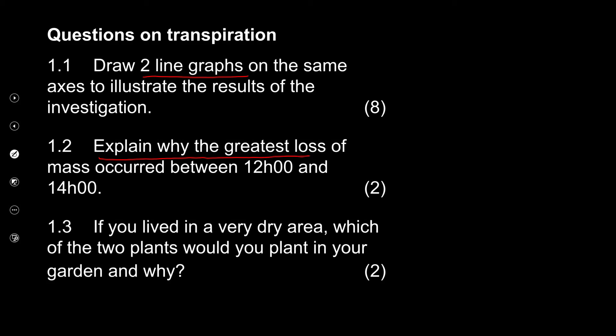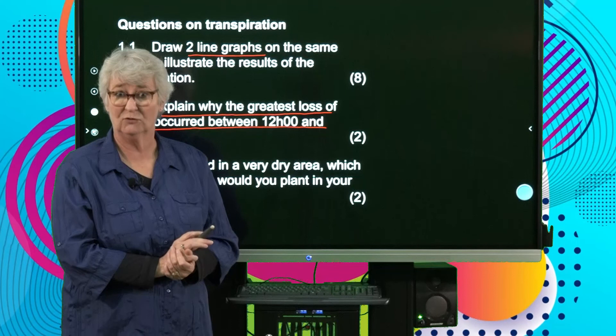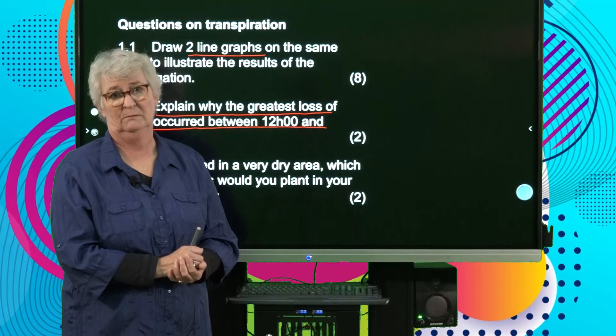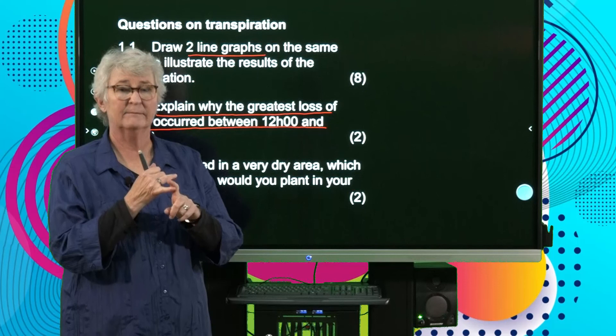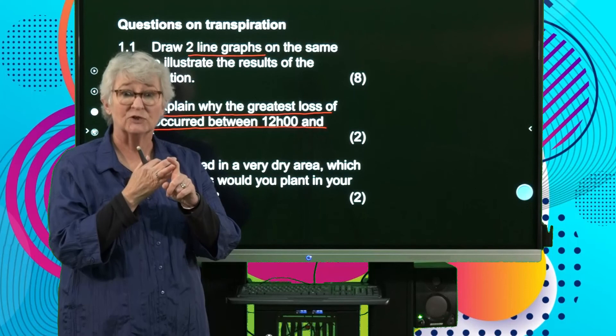Next question: explain why the greatest loss of mass occurred between 12 and 2. This links the experiment to factors which increase transpiration. We know there are four factors. Between 12 and 2 is midday — the sun is bright, so it would be high light intensity, and midday is the hottest part of the day, so it would also be the highest temperature.